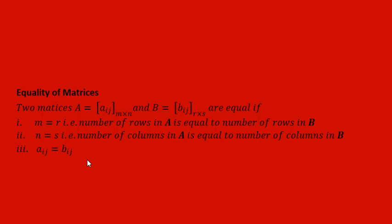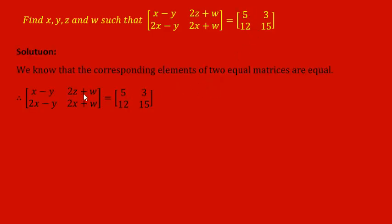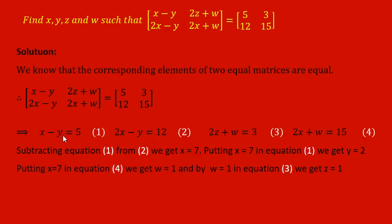Let us see one problem based on equality of matrices. We have to find the value of X, Y, Z and W such that the two given matrices are equal. Since the two matrices are equal, corresponding elements must be equal. Therefore we equate: X minus Y equals 5, the next element equals 3, another element equals 12, and 2X plus W equals 15. We frame four equations with four unknowns.